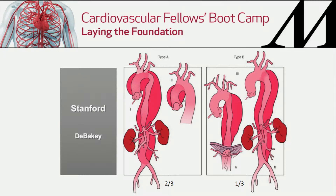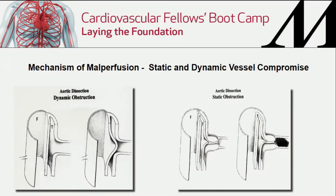For the type Bs, there's DeBakey 3A and 3B — 3A is above the diaphragm, 3B is below the diaphragm.